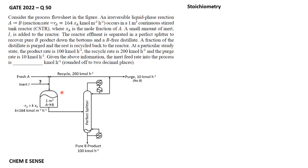In this reactor, component A is being converted. The rate of reaction is minus rA equals K times CA, and the rate constant for this reaction is 164 kmol per meter cube per hour. The reactor is fed with fresh feed, an inert substance, and steam.